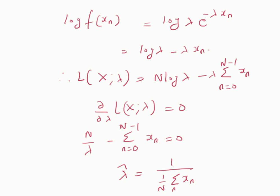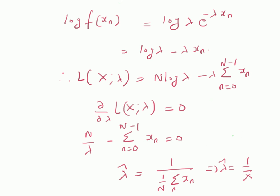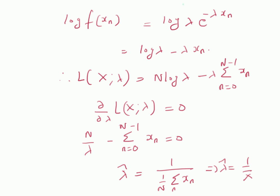The estimate of the parameter lambda of an exponential distribution is given by 1 divided by the arithmetic average of the observations — that is, lambda hat equals 1 over x-bar. Note that for an exponential distribution, the mean value is given by lambda inverse. From this estimate, we can see that the estimate of lambda inverse equals x-bar, so the estimate of the mean is the arithmetic average of the observations, which is clearly expected. Thanks for watching.